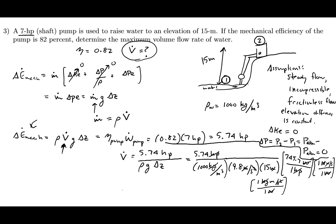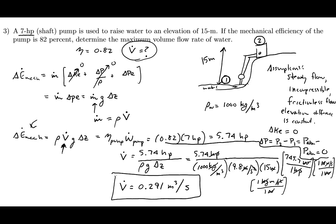After canceling units — horsepower, watts, newtons, kilograms, and meters — the volumetric flow rate works out to 0.291 cubic meters per second. These are the units we expect for a volumetric flow rate: volume per time. I encourage you to go through and verify for yourself that all the units cancel out correctly.